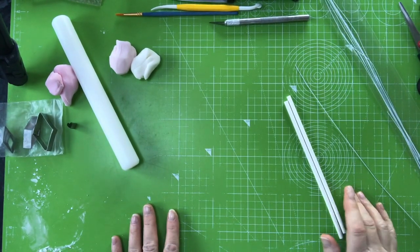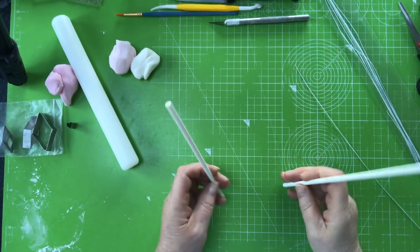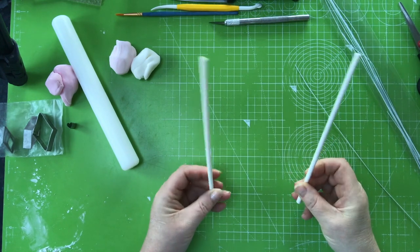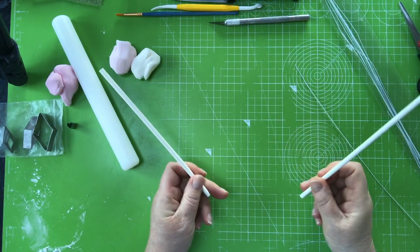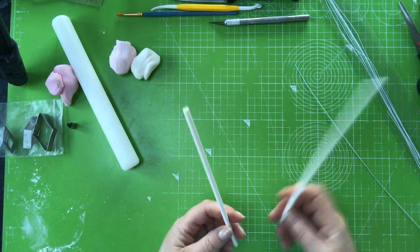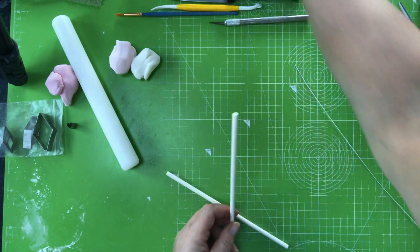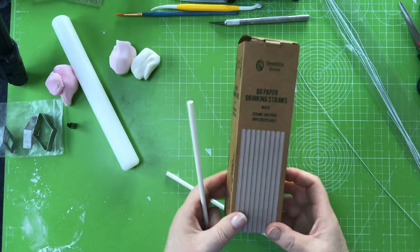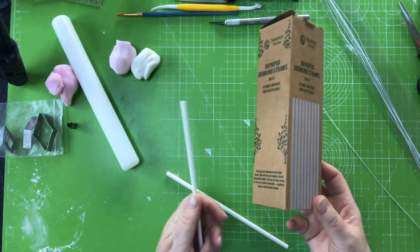In this tutorial I'm going to be showing you how I make the bunting that stands on the top of a cake for any celebration cake. It's very easy to do. You need two of these paper drinking straws which you can pick up from your local supermarket.